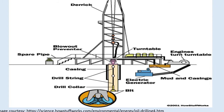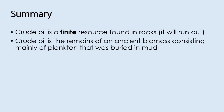In the next video, we will be looking into what happens next — you've got crude oil, but what do we do with it? Overall in this video, we've looked at crude oil being a finite resource. This is another GCSE question that comes up: what is the meaning of finite resource? Finite means something that will run out. Crude oil is formed from the remains of ancient biomass, consisting mainly of plankton that was buried in mud. Remember, it takes billions of years. The three key points: high temperature, high pressure, and absence of oxygen.